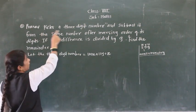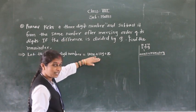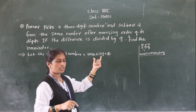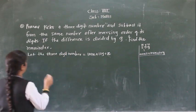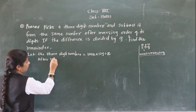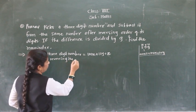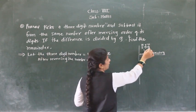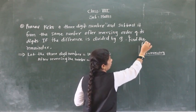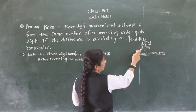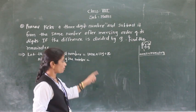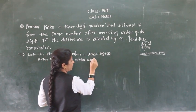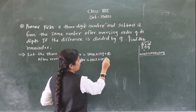Then Pranam wants to subtract this from the same number after reversing the order. So after reversing, what will be there? Reverse the digits — take the units digit to the hundreds place and the hundreds digit to the units place. So 9 becomes the hundreds digit, 5 stays in the middle, and 2 goes to units — giving 952. So the reversed number is 100z plus 10y plus x.